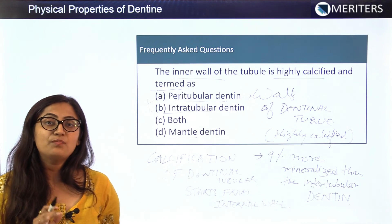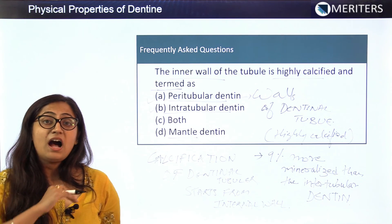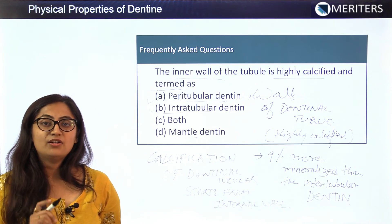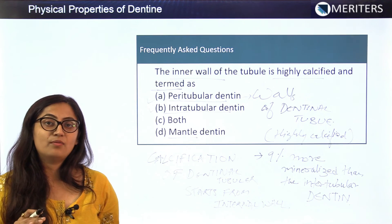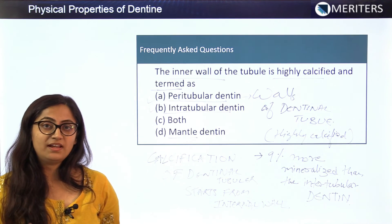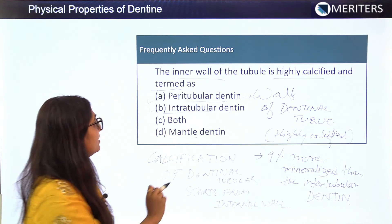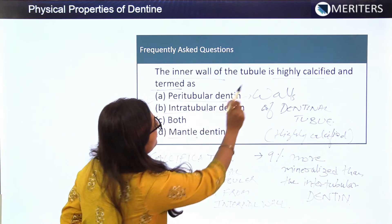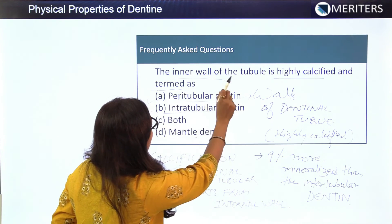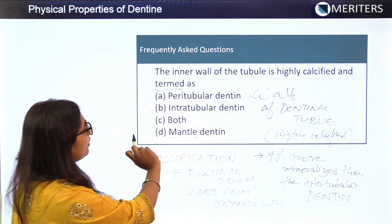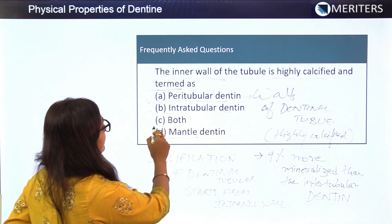Mantle dentine is the most prominent outermost layer of dentine formation, but this is not what the question refers to, so the answer remains peritubular/intratubular dentine.